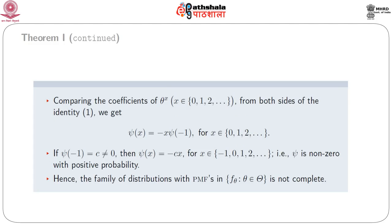Comparing coefficients of θ^x from both sides, we get ψ(x) = −x·ψ(−1) for x ∈ {0, 1, 2, …}. If ψ(−1) = c ≠ 0, then ψ(x) = −cx for all x ∈ {−1, 0, 1, 2, …}, that is ψ is nonzero with positive probability. Hence the family of distributions {f_θ : θ ∈ Θ} is not complete.